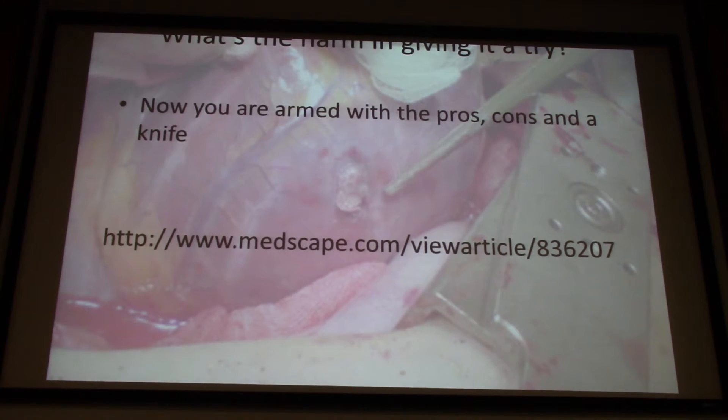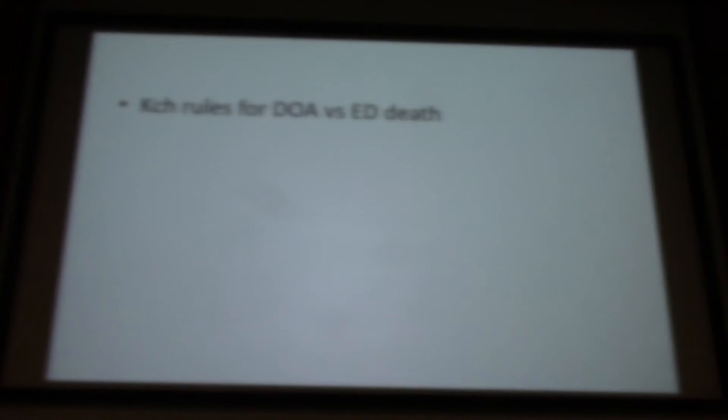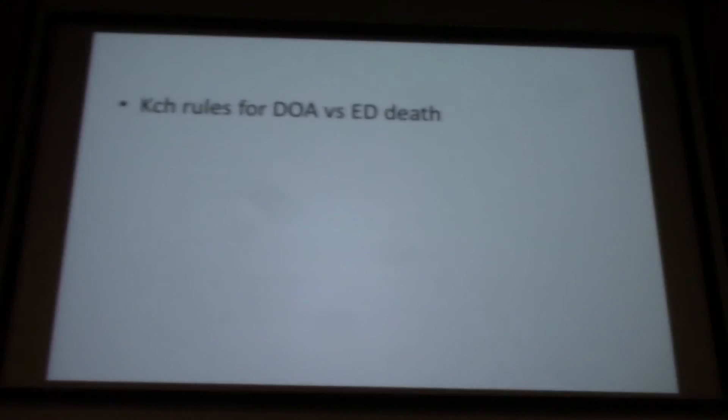I had two patients come in simultaneously with gunshot wounds from the same shooting. Trauma was doing a thoracotomy on one patient while I resuscitated the other who was relatively stable. I'd done an aggressive resuscitation — intubation, a Cordis, blood — and reached my limit. I had to pull the trauma surgeon away and tell him: this thoracotomy patient is dead, come save this person instead. He came, they took her straight to the OR, and she survived. That other guy was dead.